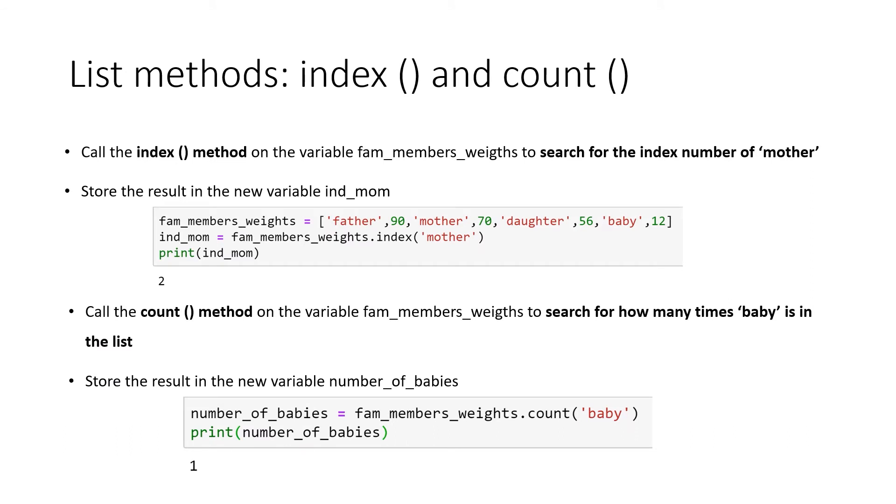Two other very useful methods is the index method and the count method. Imagine you know the content of an element in your list, but you don't know or you don't want to calculate yourself the index number of that element. So you can easily apply the .index method to your list and search for the element, in this case mother, to find out the index number of our element. So in this case, mother has the index number of two. If you want to find out how often a certain element is representative within a list, you can call the .count method. And in this case, we want to find out how often is baby in our list, and we can see it is one time, which is of course correct.